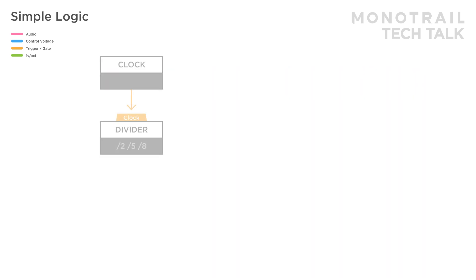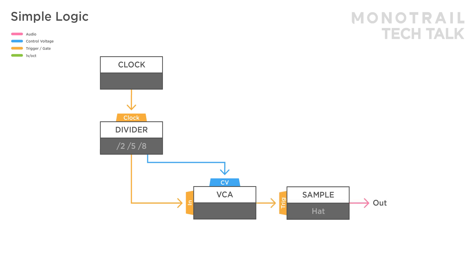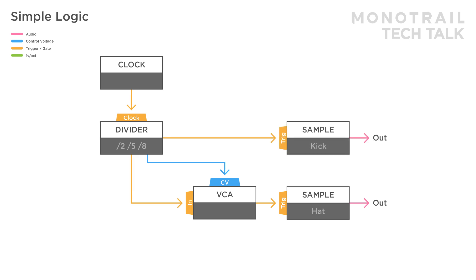Here you see that in a simple patch. A clock is driving a divider and two divisions are used as input and CV input of the VCA. The resulting pattern is used to trigger a hit. If you use fun uneven divisions to feed the VCA you create more interesting hit patterns. A kick is triggered by a division.